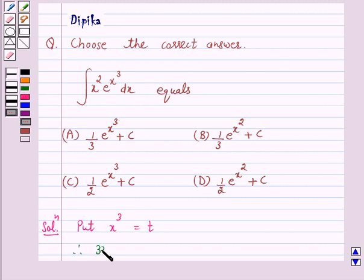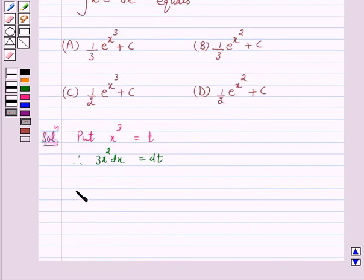Therefore, 3 x square dx is equal to dt. So the given integral x square into e raised to power x cube, now x square dx is equal to 1 by 3 dt.